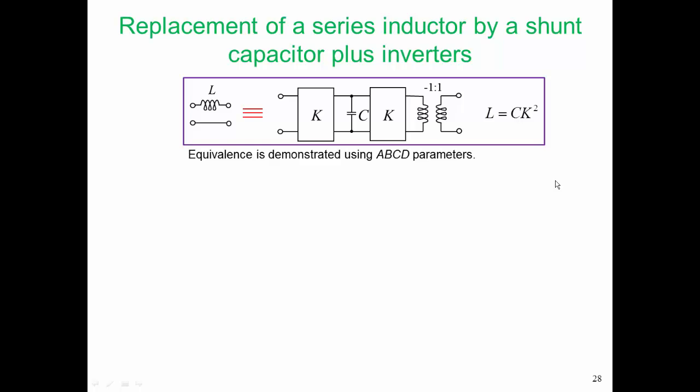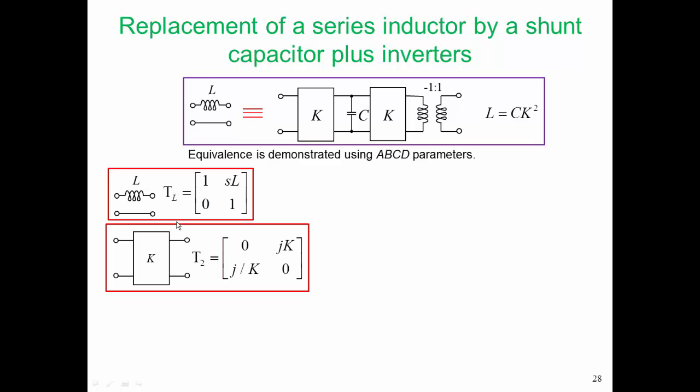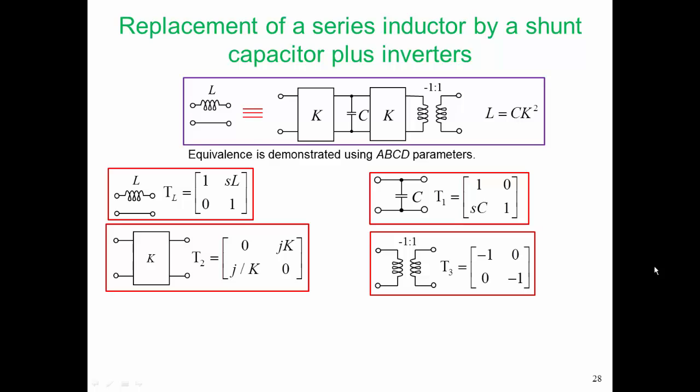To demonstrate the equivalence, we need to use ABCD parameters. The ABCD parameters for the inductor on its own are shown here. We're using the T matrix for our ABCD parameters. Here is the ABCD parameter for our inverter, for our shunt capacitor, and for our unity inverting transformer.